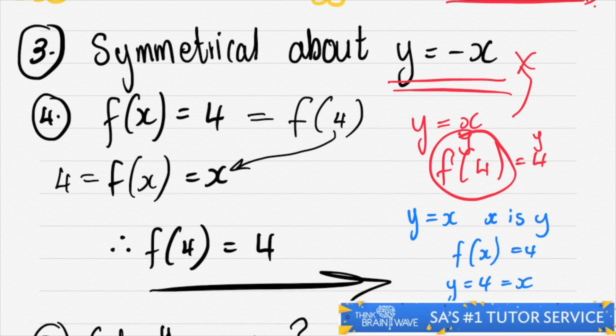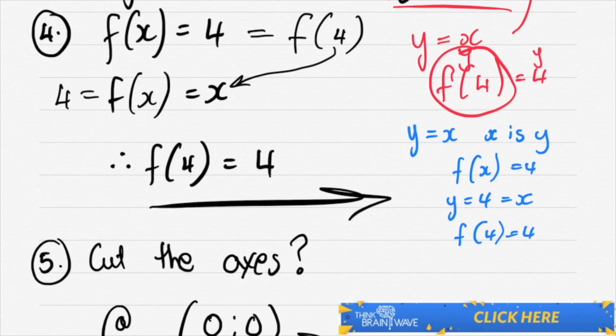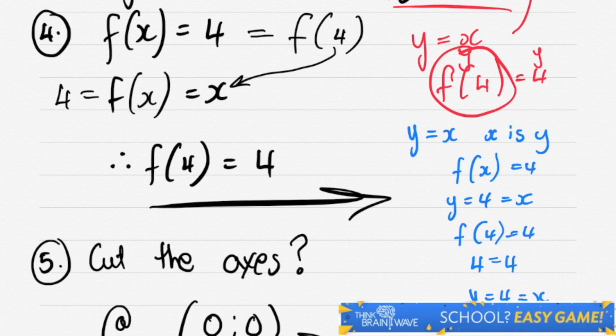So if we have a function like this, we've got function of 4 is equal to 4. It means literally 4 is equal to 4 or y is equal to 4, which is equal to x. It's just very important that you understand that a function of x is actually equal to y. It's the same thing.